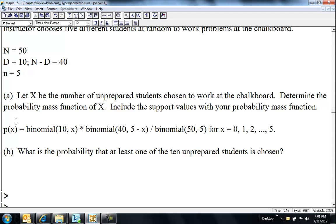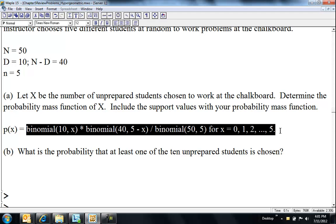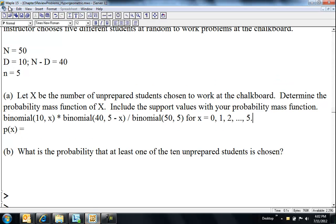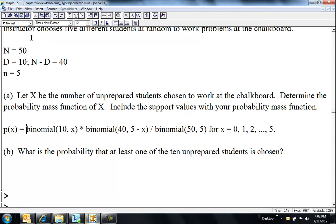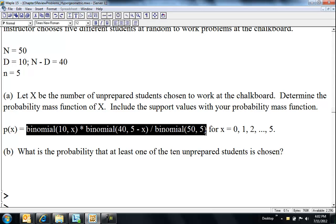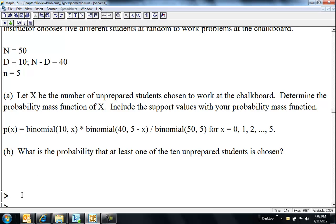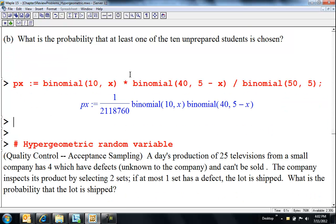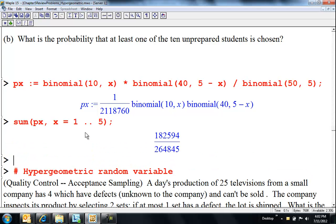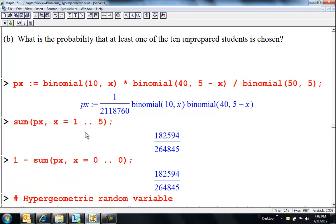What's the problem? So then we're answering questions. So let's go ahead and put this in. That's our p of X. And what's the probability that at least one of the 10 unprepared students is chosen? So sum p of X, X equals 1 to 5, at least 1. Or we could have done 1 minus sum p of X, X equals 0 to 0. 1 minus the probability of none, either way.